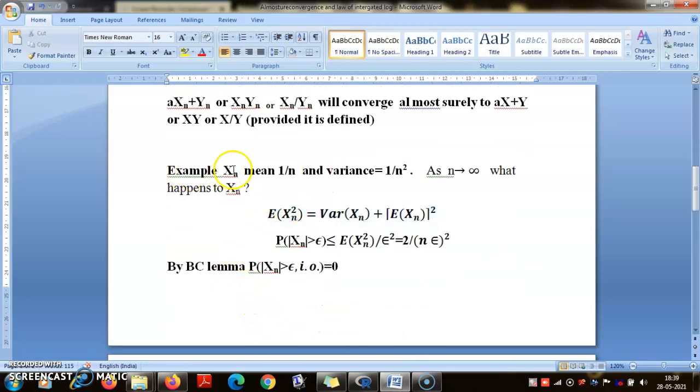Let me start with the problem. I have a sequence of random variables Xn, each with mean 1/n and variance 1/n². I asked what happens to Xn as n is increased. If you recall the definition of variance, for any random variable X, E[X²] = Var(X) + (E[X])². From there you get E[Xn²] in this case is 2/n².